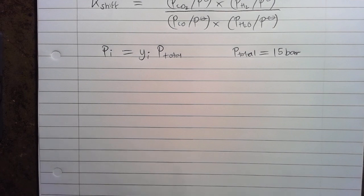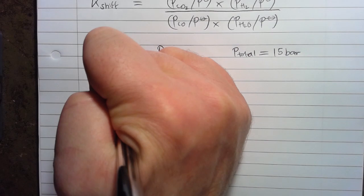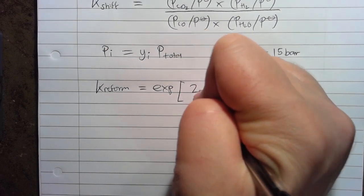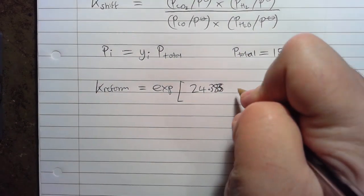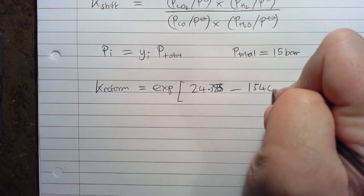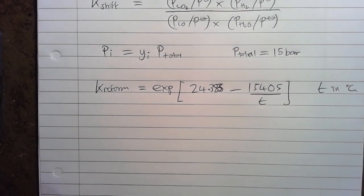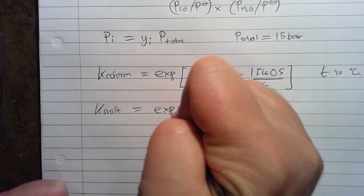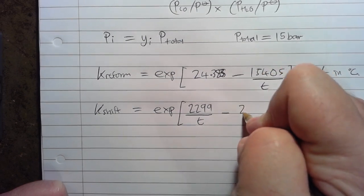Now we also need to have a value for K shift and K reform and we can get that from some correlations that I'm going to give you right now. So K reform, these are also given in the problem statement, K reform equals exponential of 24.383 minus 15405 divided by T and T is the temperature in degrees C. K shift equals exponential of 2299 divided by T minus 2.79.